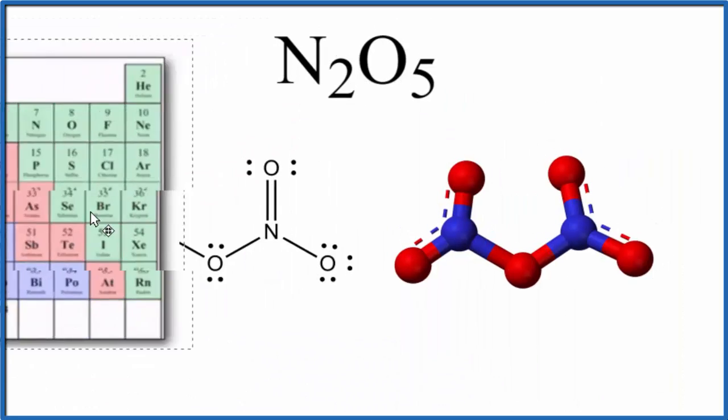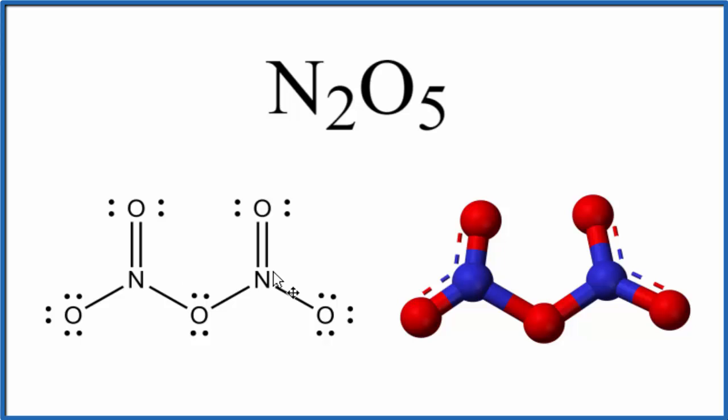Let's take a look at the structures here. This is the Lewis structure for N2O5, and what you see is, because it's a covalent compound, electrons between atoms are shared. This single bond here represents a pair of electrons shared between the nitrogen and the oxygen.